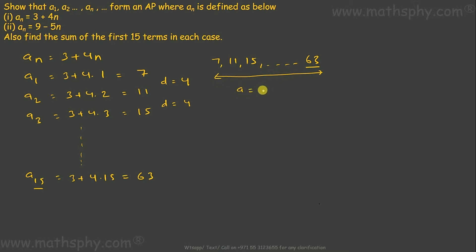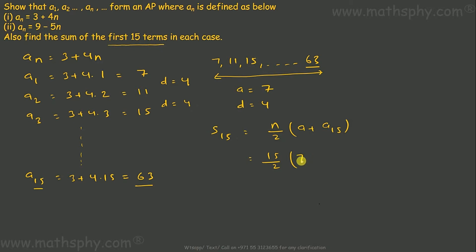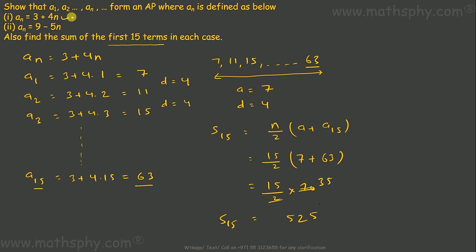Now we find the sum of the first 15 terms. The 15th term is 63. The sum formula is n over 2 times (first term plus last term), so 15 over 2 times (7 plus 63), which gives 15 over 2 into 70, giving us 525. The sum of the first 15 terms for this equation is 525.